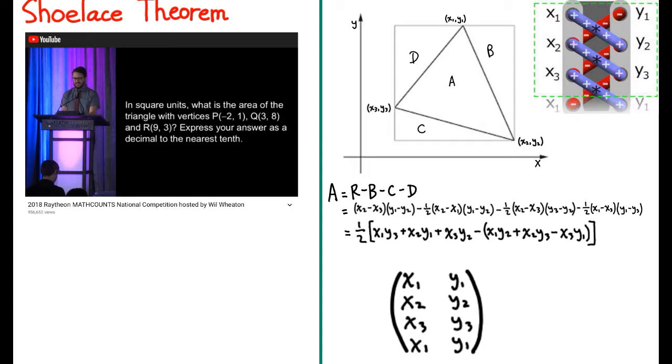So first of all, this problem looks like it obviously has to do with coordinates. You might be thinking we can just split the triangle into parts, and then you'll be able to figure it out, but that's not the easiest way to do it. The easiest way to do this, and the quickest way as well, is using Shoelace theorem. Now, you might be thinking, that's a weird name for a theorem. Well, I'll be showing you what it is.